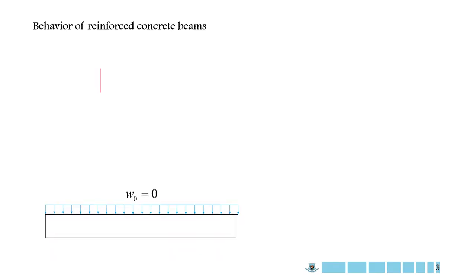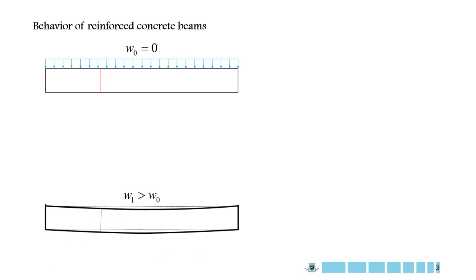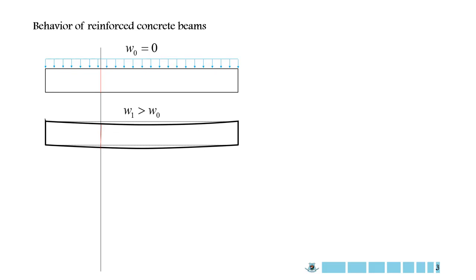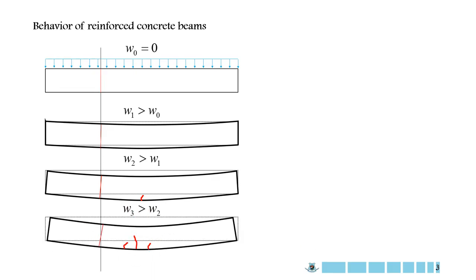What happens when a beam is loaded? In this slide, I have put together the generalized behavior of a reinforced concrete beam. In the first picture, you can see if there is no load on the beam, the beam will be perfectly horizontal, and the red line is perfectly vertical. When we apply the load on the beam, it starts to bend, and the red line rotates with the bending of the beam. If we increase the load, the rotation of that red line increases as well. If we keep increasing the load, the beam will crack from the bottom fiber, and ultimately it will fail.